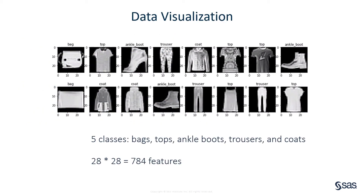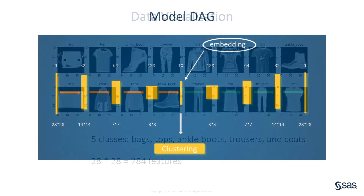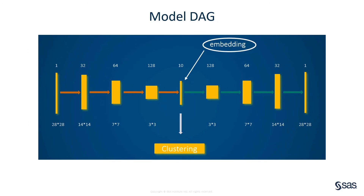We use a portion of the Fashion MNIST dataset to compare these two approaches. The dataset contains 28 by 28 grayscale images from five different classes: bags, tops, ankle boots, trousers, and coats. Here is what the model looks like. We train an autoencoder model for feature extraction. The bottleneck layer contains 10 neurons, which can then be put into k-means clusters. This is the idea of the first approach — dimension reduction plus traditional clustering.